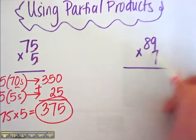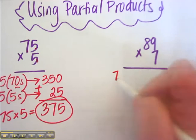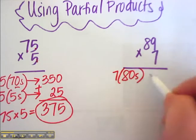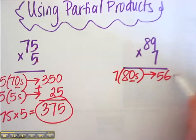Next problem 89 times 7. Well I'm going to take the 7 and put it here. 7. 8 is 80s. And 7 times 8 is 56. But there's still a 0 so I tagged that on. 560.